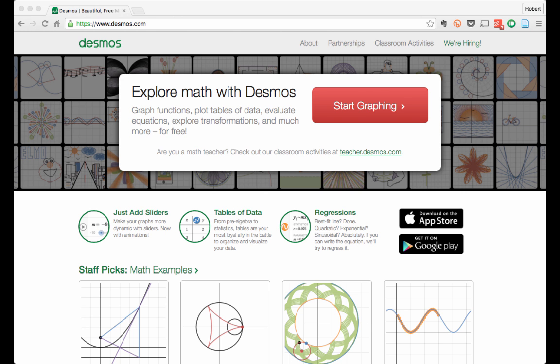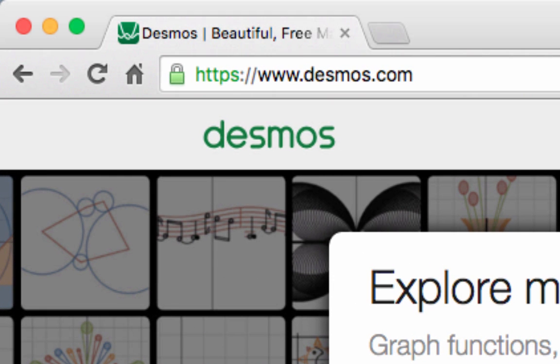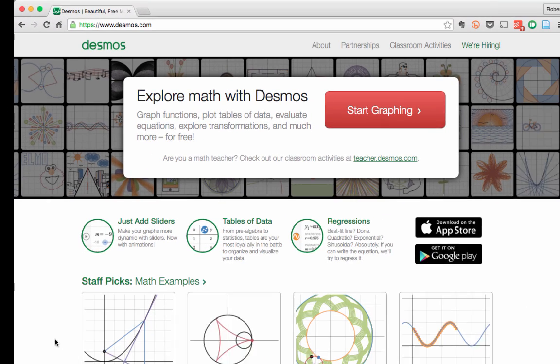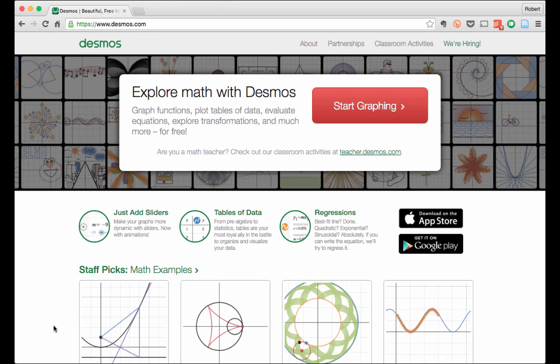So open up your favorite browser and go to Desmos.com. You can access Desmos through any device that can browse the web with a standard web browser like Safari, Chrome, or Firefox. There are also special Desmos apps available for both iOS and Android. For this video, we're going to focus on the web interface.